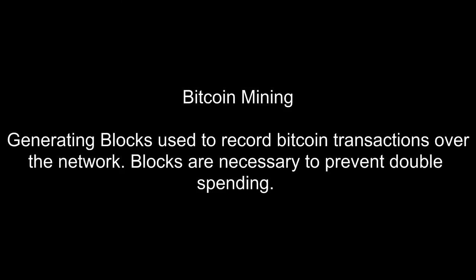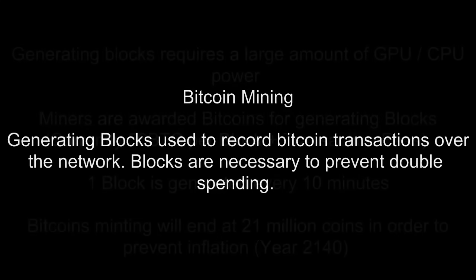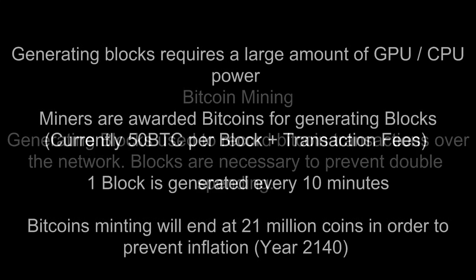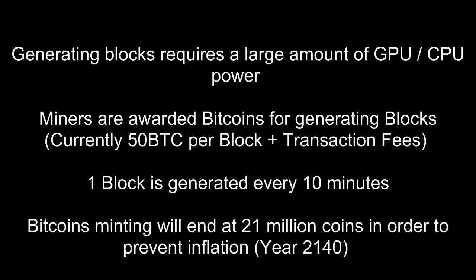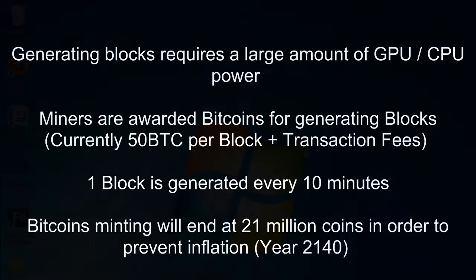There's one more way of getting coins and that's through Bitcoin mining. Bitcoin mining is the process of generating blocks used to record Bitcoin transactions over the network. Blocks are necessary to prevent double spending. Blocks are generated by Bitcoin miners and require a large amount of GPU or CPU power. Whenever you generate a block you are awarded 50 Bitcoins per block plus any transaction fees sent to the network, and note that one block is generated every 10 minutes.